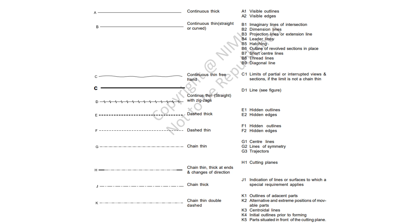Type A is continuous thick — used for visible outlines and edges. Type B is continuous thin — used for imaginary lines of intersection, dimension lines, projection lines, leader lines, and hatching lines.